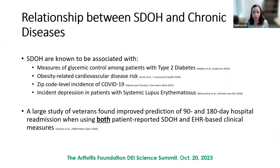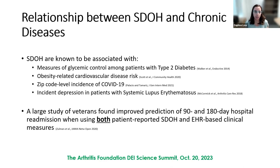When it comes to the relationship between social determinants of health and chronic diseases, this has been well shown. For example, individuals with a high degree of social need are known to have a harder time with glycemic control among patients with type 2 diabetes. SDOH are also associated with cardiovascular disease risk, ZIP code level incidence of COVID-19, and incident depression among patients with lupus.